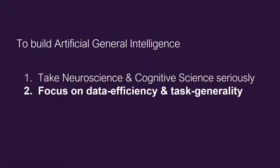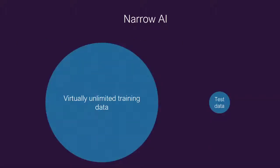So the second aspect is focus on data efficiency and task generality. So currently, with AI systems, which are narrow AI systems, are trained using virtually unlimited training data. You shove a lot of data into the system and you test it on very little test data while you increase the training data. This is how currently the systems are tested on.